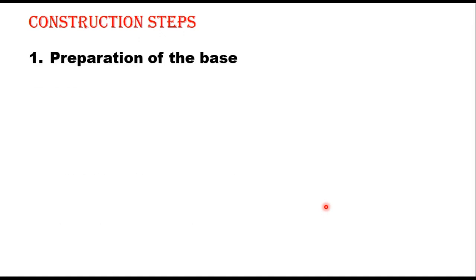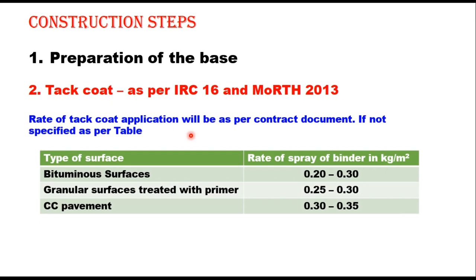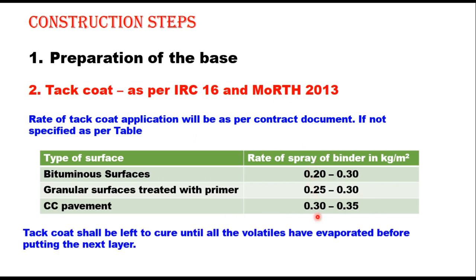The first step in construction is preparation of the base. The surface on which the bituminous concrete layer is to be laid should be cleaned of all loose material by means of mechanical broom and air jet. If geosynthetics are specified in the contract, they will be laid as per contract provisions. If a stress-absorbing layer is specified, it will also be applied as per standard procedure. The second step is to apply tack coat. Material for tack coat should be as per IRC-16 or MORTH specification as given in the contract. The rate of tack coat application will be as per the contract document, or per the table suggested in MORTH 2013. Tack coat shall be left to cure until all volatiles have evaporated before placing the next layer.